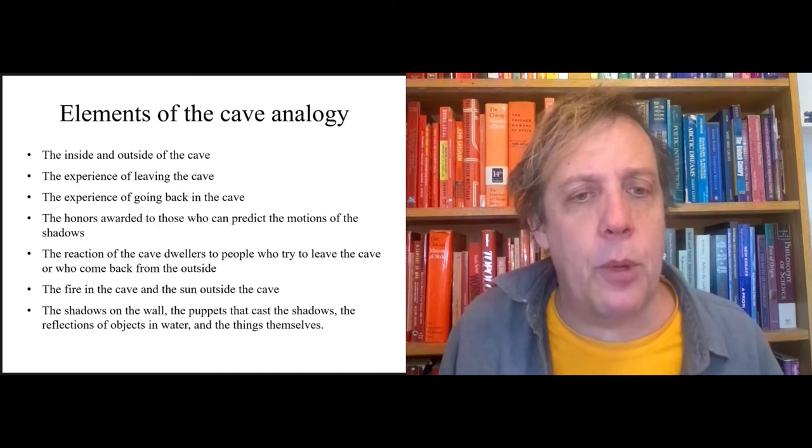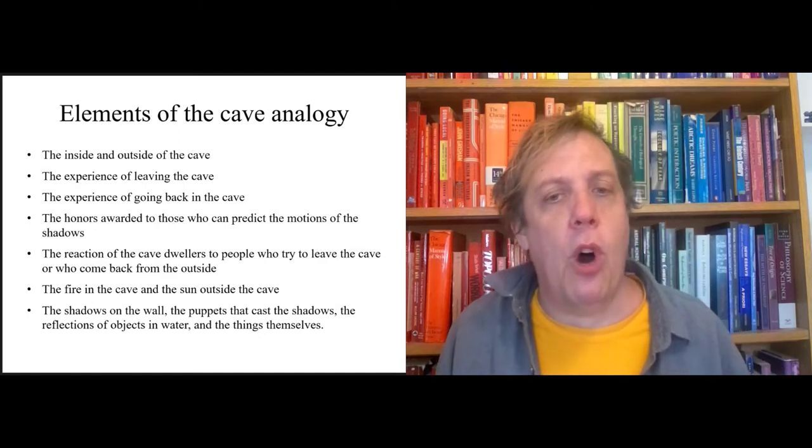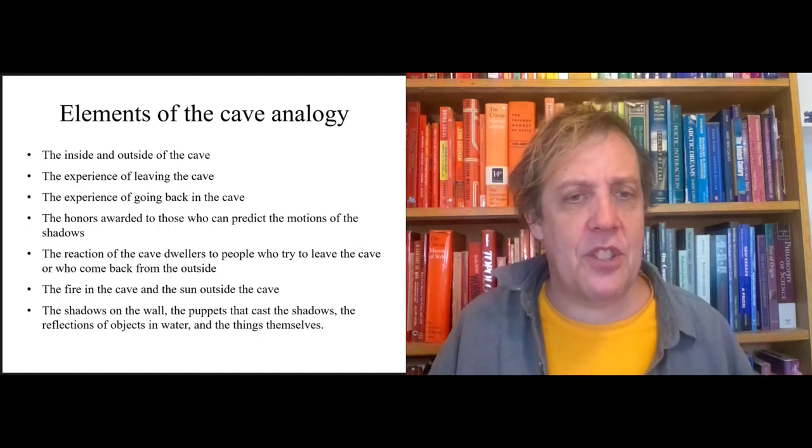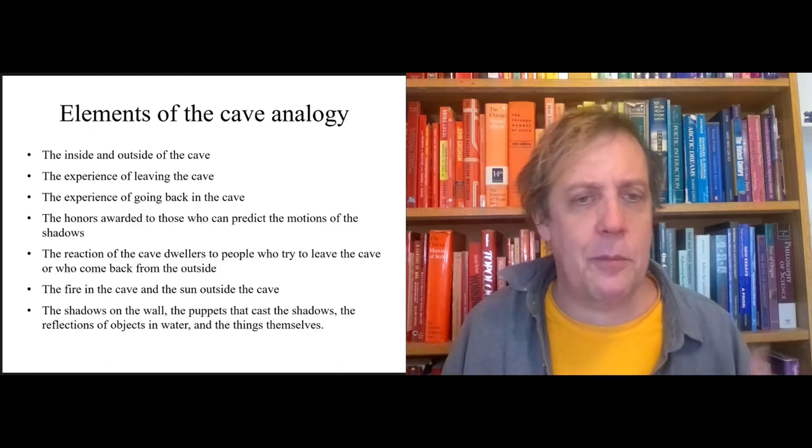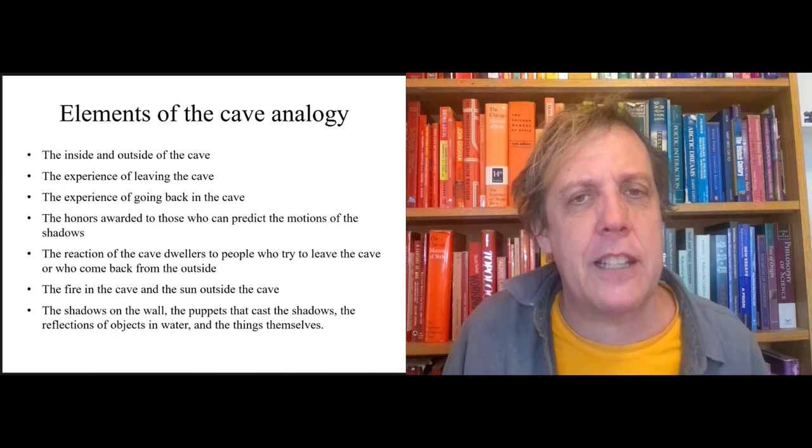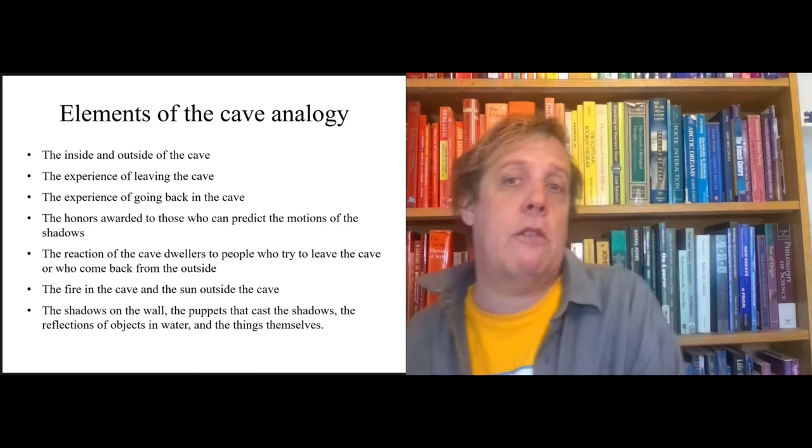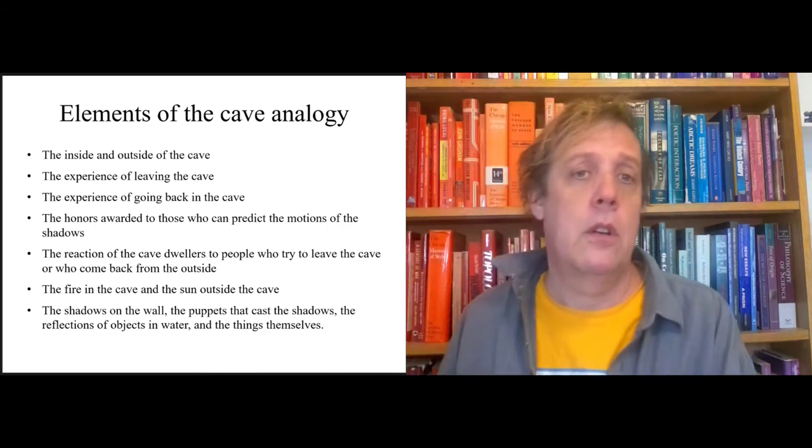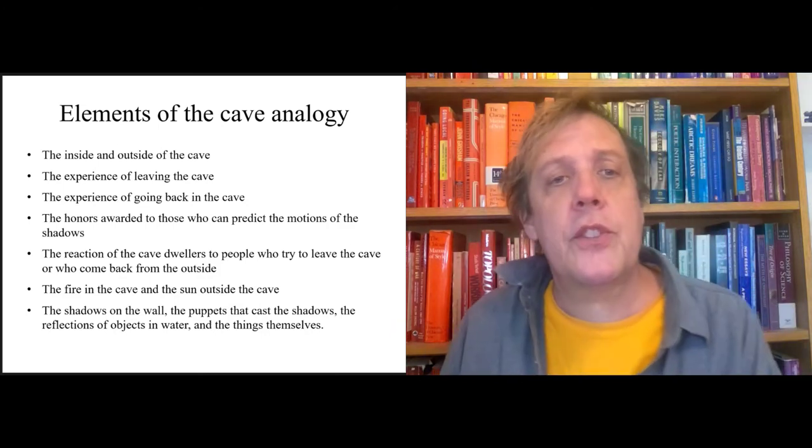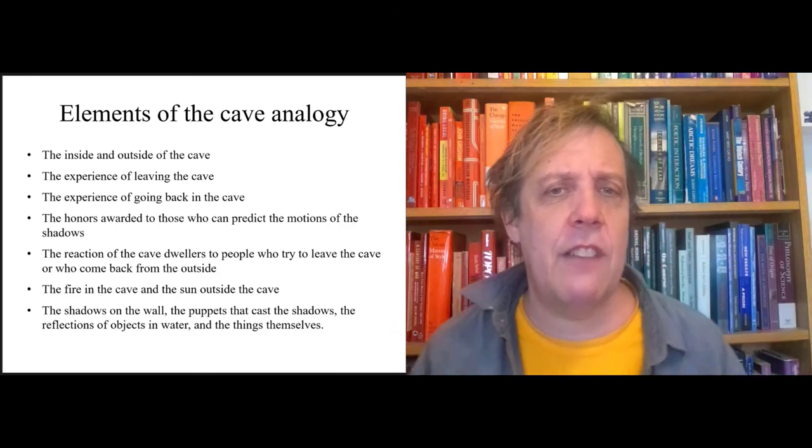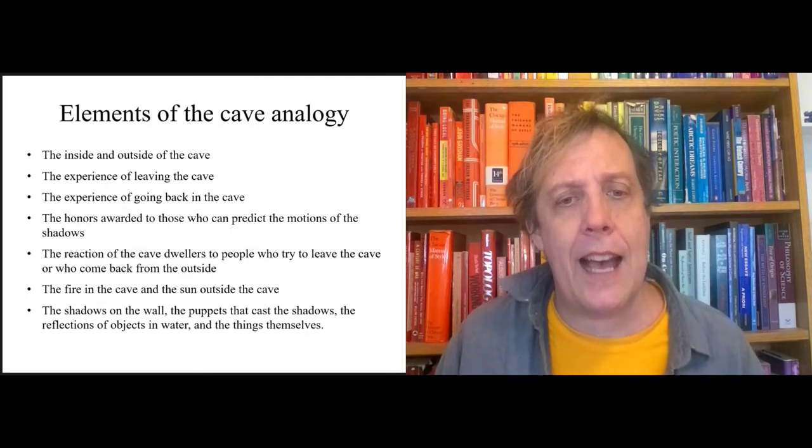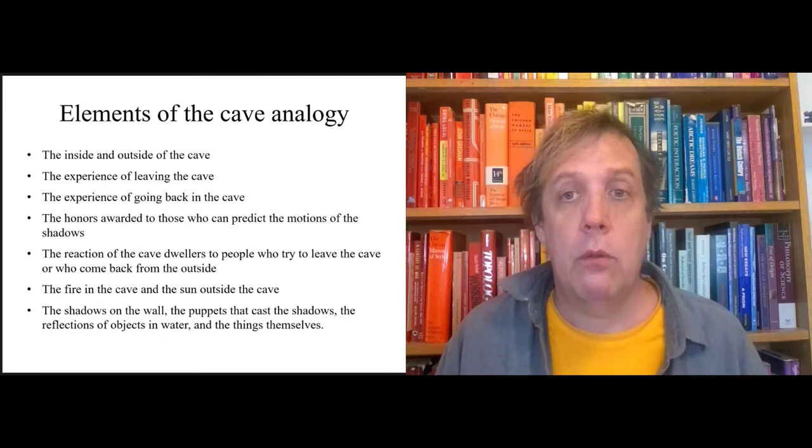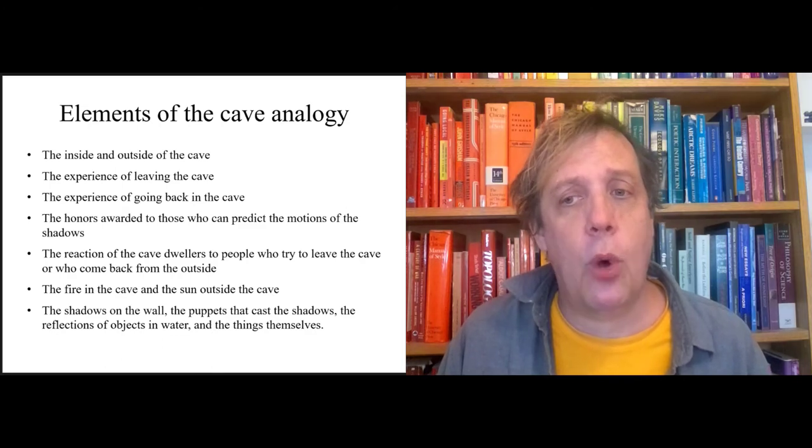The shadows on the wall, the puppets that cast the shadows, the reflections of objects in the water, the things themselves. This is a slightly different way of breaking it down, but it boils down to the same thing. You've got four levels. So that gives you a sense of the power of this as an analogy for, like Plato says, how the soul is enlightened or unenlightened.